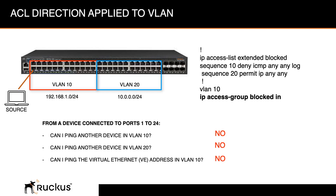Can I ping another device in VLAN 20? The answer is also no, because the ping gets dropped at the ingress port in VLAN 10 and never gets a chance to reach VLAN 20. Can I ping the Virtual Ethernet interface in VLAN 10 — so the 192.168.1.1 address? No, because it's filtered in hardware at the ingress interface. All three cases get applied from the perspective of the interface, not the VLAN itself.